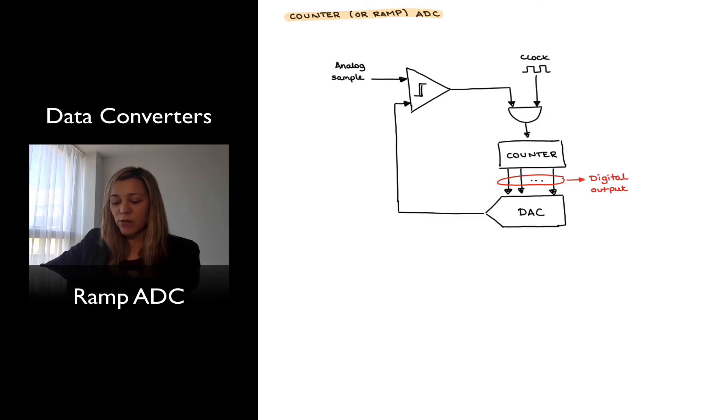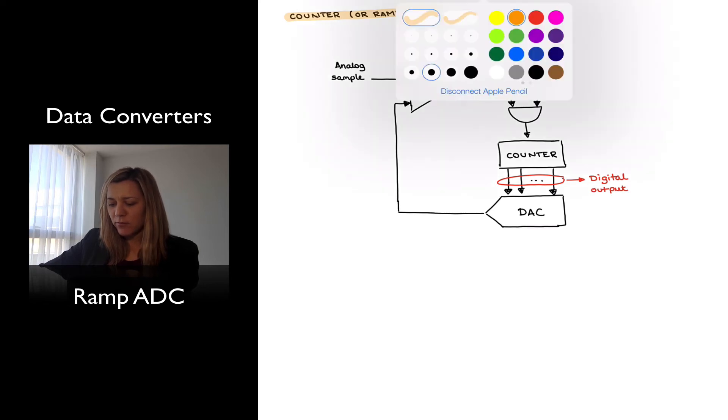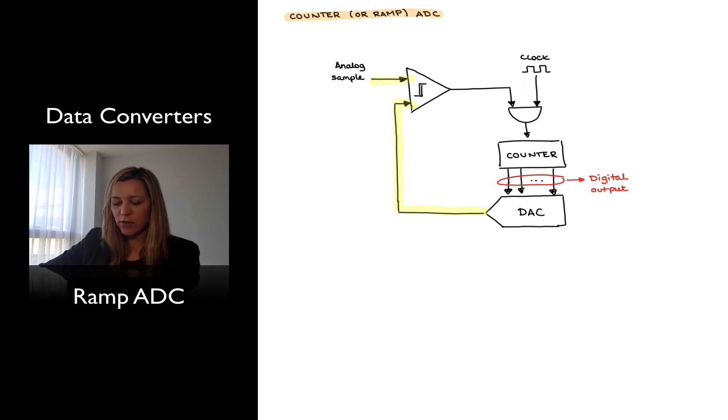Since it's starting from zero, initially the output of the counter is going to be lower than the analog sample, but as it goes increasing, at some point the output of this DAC is going to exceed the value of the analog sample, at which point the output of the comparator will trip.